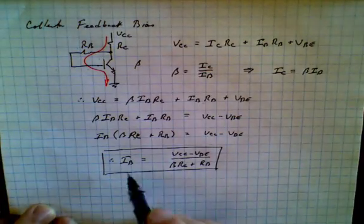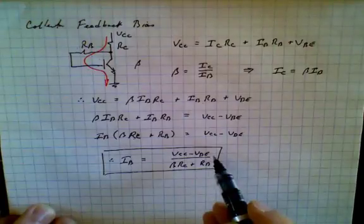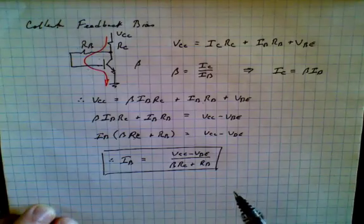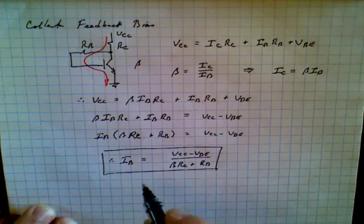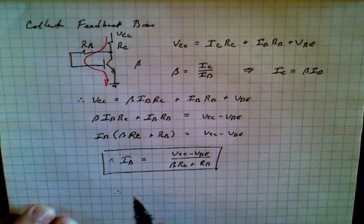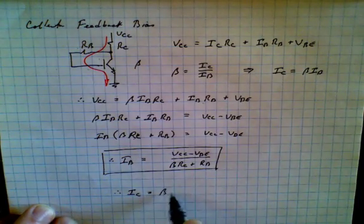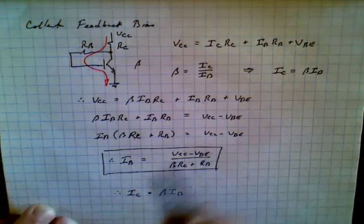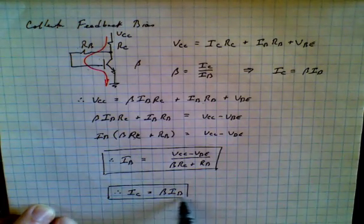Now once you know the base current, because we know the supply voltage, we know the voltage of base to emitter is 0.7 volts, beta comes from the data sheet, Rc and Rb are the values that we used to design the circuit with, we can then find Ic. So Ic is equal to beta Ib. You've already seen that right up here. So that's the second equation which defines how this circuit operates.